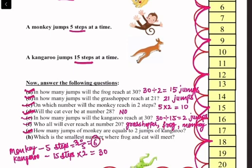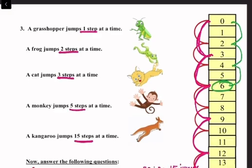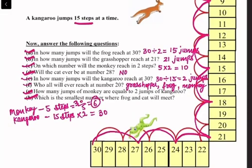(h) What is the smallest number where the frog and cat will meet? The frog jumps two steps and the cat jumps three steps. The cat reaches 3, 6 and the frog reaches 2, 4, 6 — so they will meet at number 6. The answer is 6.